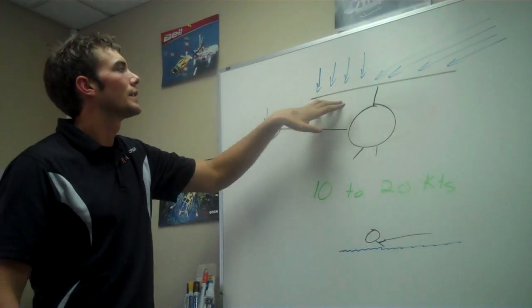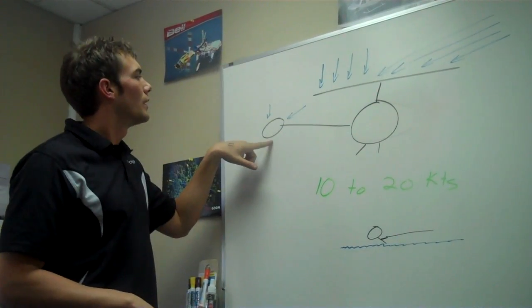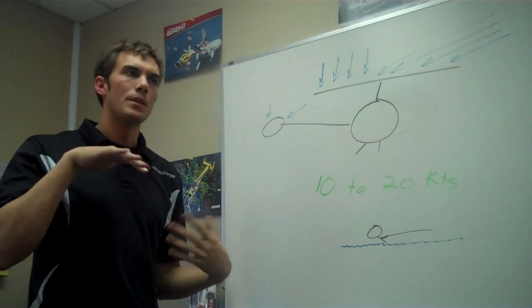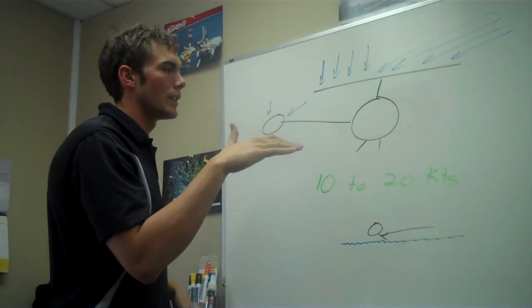You're getting better lift here, less lift in the aft, so you get a balloon up. Then you're getting unequal lift on your tail rotor. It's becoming more effective, so there's going to be a little bit of yaw in there.